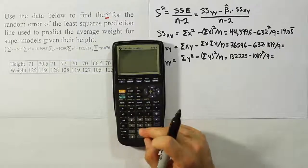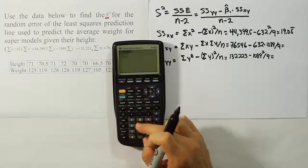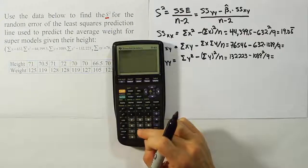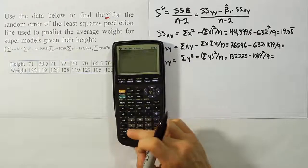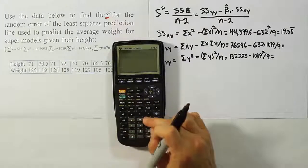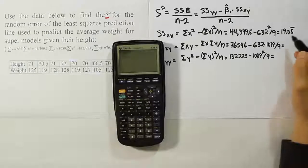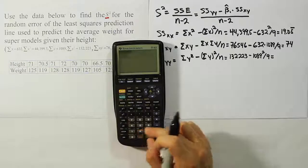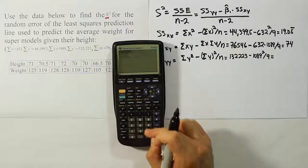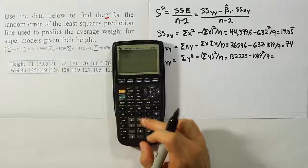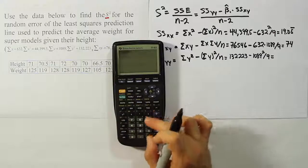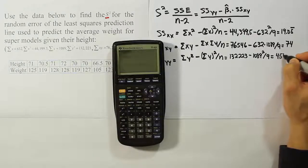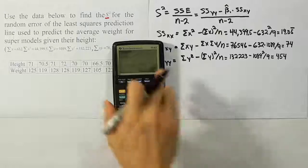For the next number we get 76,546 minus 632 times 1089 divided by 9. When we hit enter we end up with a nice number of 74. Then we'll have 132,223 minus 1089 squared divided by 9. Hit enter we get 454. So there are three sum of squared values.